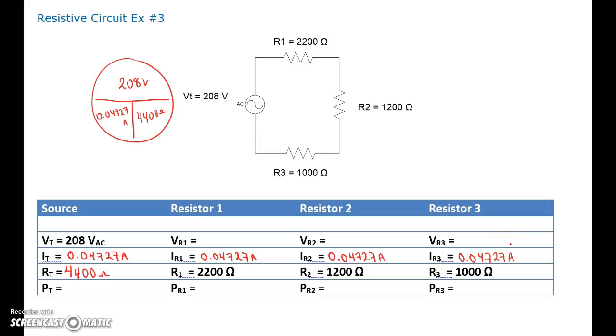So we got 0.04727 amps right across the board. Now be careful if you're on cruise control, then you may have a little bit of dyslexia and then put in the wrong values. Looks like we're good.